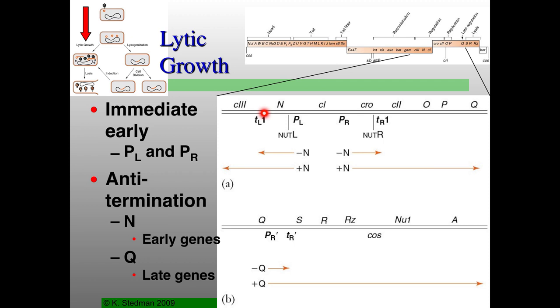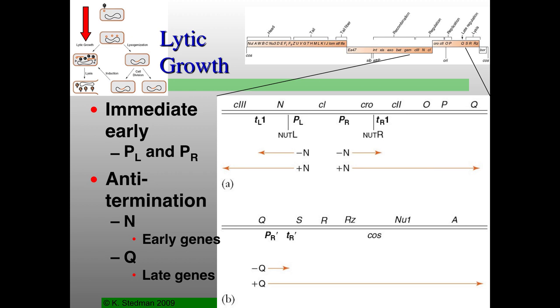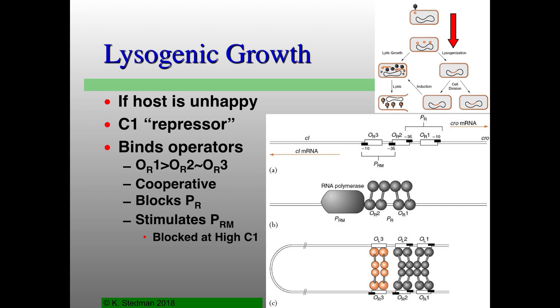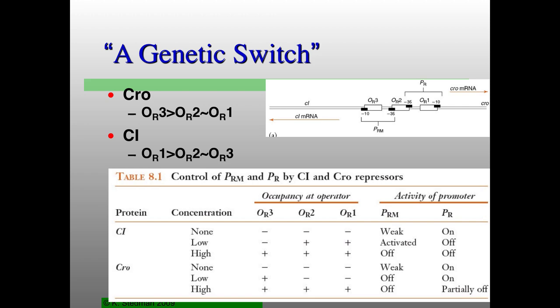The main way that these promoters are controlled is anti-termination with the N protein. It stops termination at each of these terminators, the little t left and right. This is what happens when you have lysis. If you have lysogeny, this is blocking the activity of those PL and PR promoters. What does the blocking is the Lambda repressor.